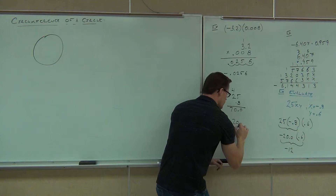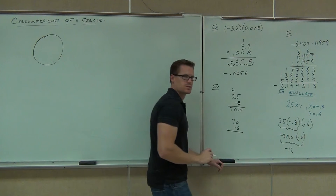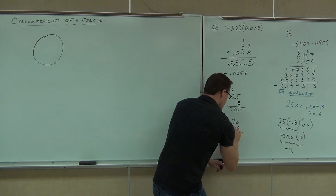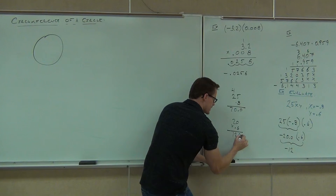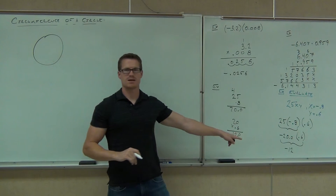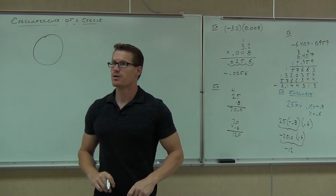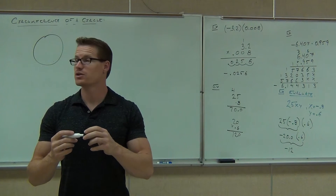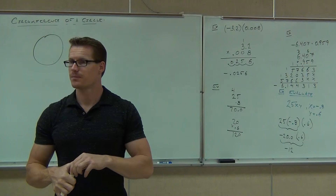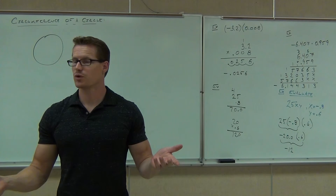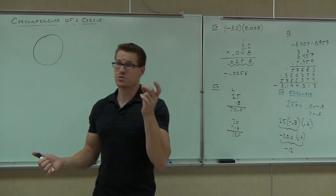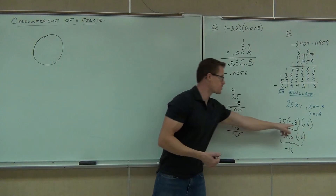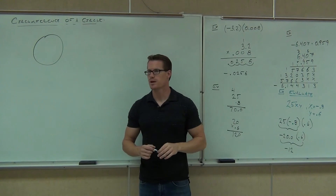If you continue: 20.0 times 0.6 — you really don't need the .0. 20 times 0.6 gives you 12, and you're moving one decimal place, so that's 12.0. Of course it's negative, because you had a positive times a negative. Multiplication is commutative and associative, so how you multiply doesn't really matter. As long as you multiply all three of these at some point, you're going to be just fine.